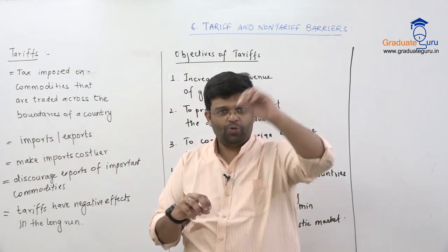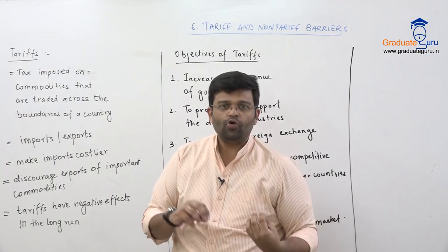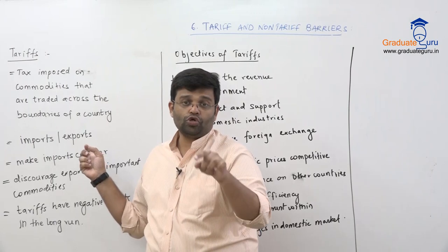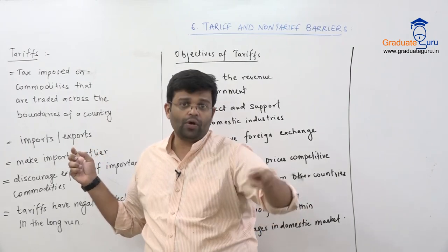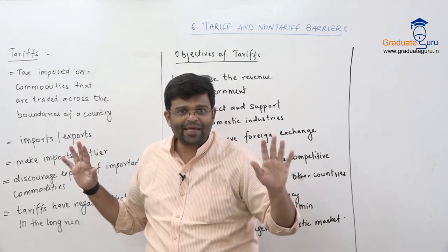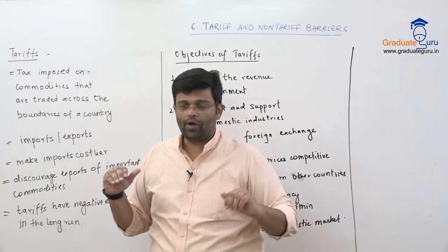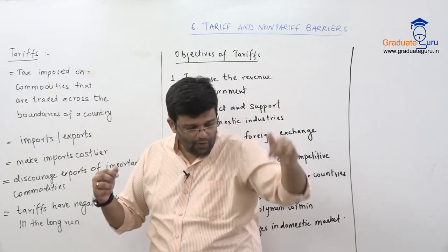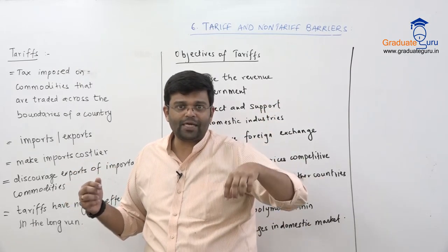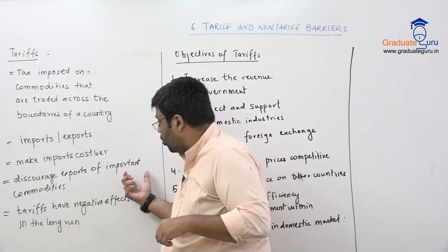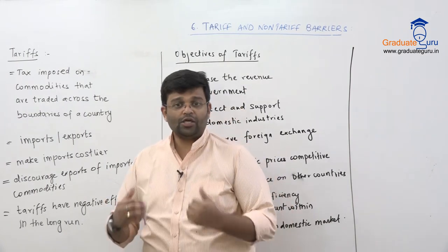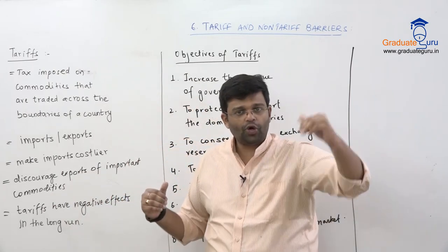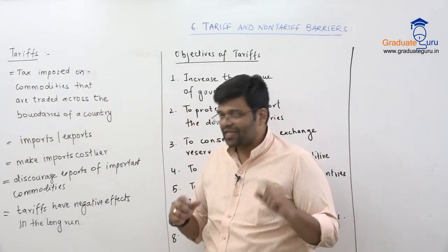When someone is exporting, a tax is imposed on their export income. This makes imports costlier. When imports become costly, local people will buy from the domestic industry. If a tax is imposed on exports, exporters will not export — they will sell in the domestic local market instead. This keeps important commodities like agricultural goods available in the domestic market rather than being exported.